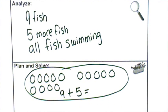And I know that nine and one is ten. And four more is fourteen. So, my answer is fourteen fish.